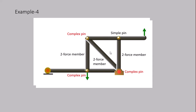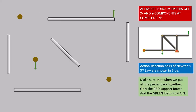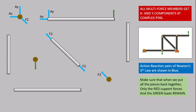This frame has five members and three complex pins, giving us eight free body diagrams altogether. This complex pin interacts with the top horizontal member — action and reaction. This two-force member interacts with this pin — action-reaction — and also interacts with that pin — action-reaction.